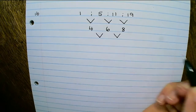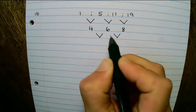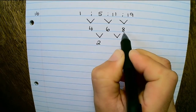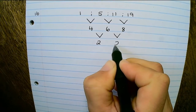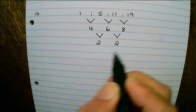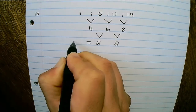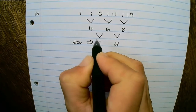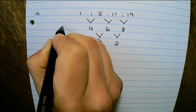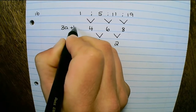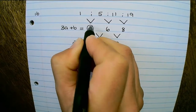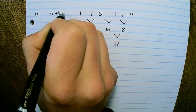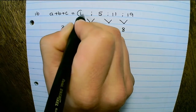Then we find the second differences: 6 minus 4 equals 2, and 8 minus 6 equals 2. From this we get the equations: 2a equals 2, 3a plus b equals 4, and a plus b plus c equals 1.